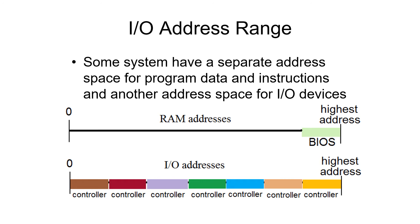In the system with separate address space for I/O devices, you have two sets of numbers from zero to a large number. If you're addressing memory, the bus has a wire indicating this is a memory access and it will access the RAM. At some high address, the BIOS or ROM overlaps the addressing, so when the CPU addresses a high address it gets information from the BIOS ROM. For I/O, if it specifies it wants an I/O access, it specifies the individual I/O controller's address. The I/O controllers can overlap the memory addresses — you can have an I/O controller at address 42 and memory at address 42; they're just different address spaces.